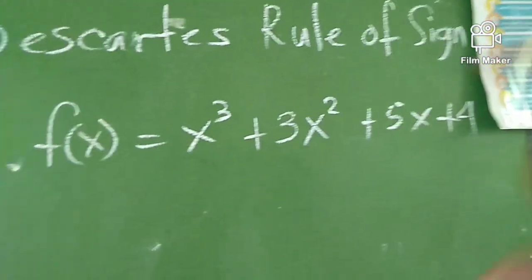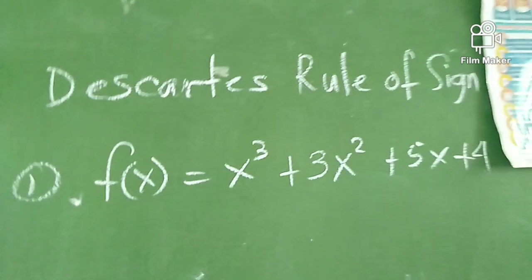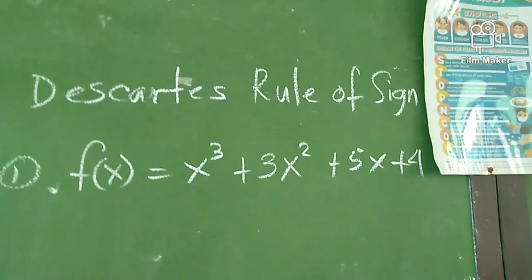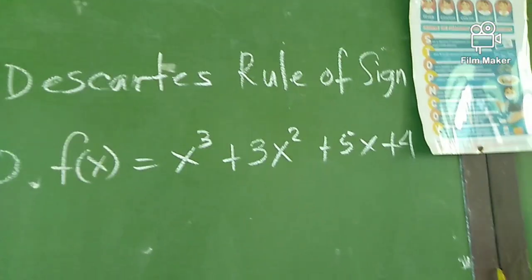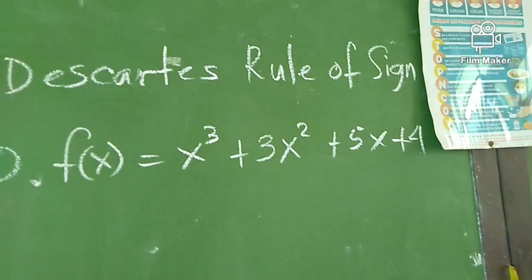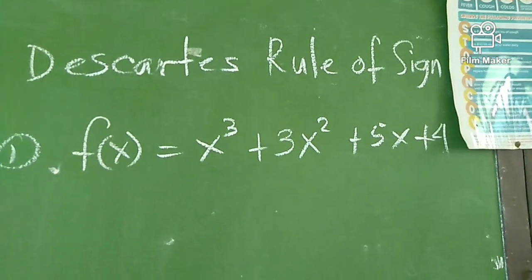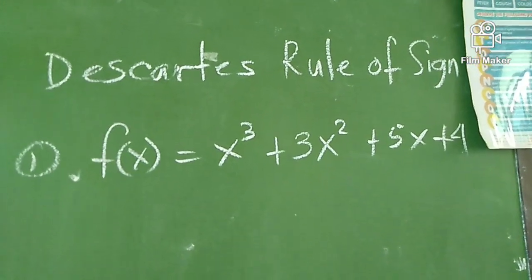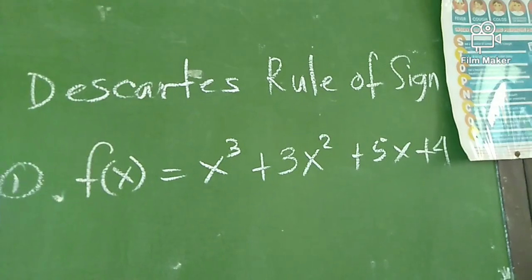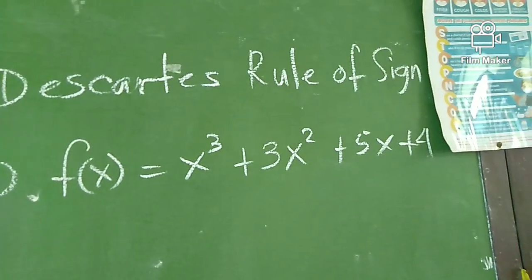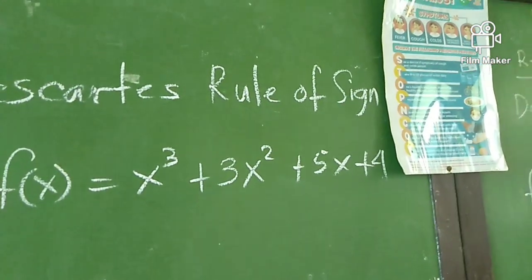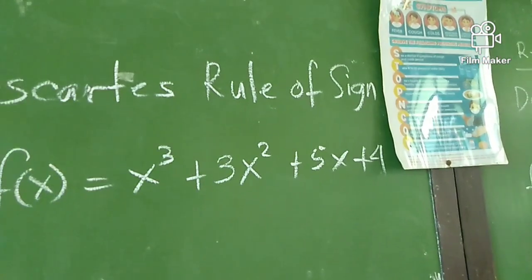The main purpose of the Descartes Rule of Signs is that we can immediately identify how many positive real zeros there are, how many possible negative real zeros, and how many possible non-real zeros.